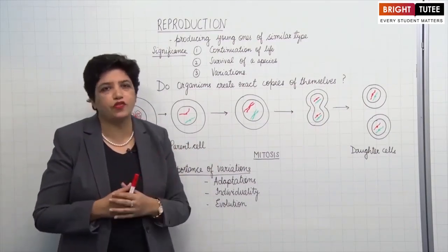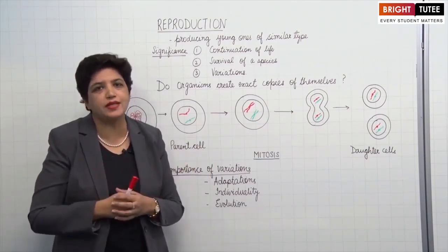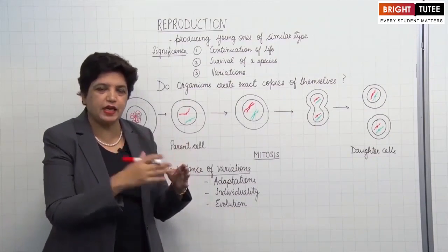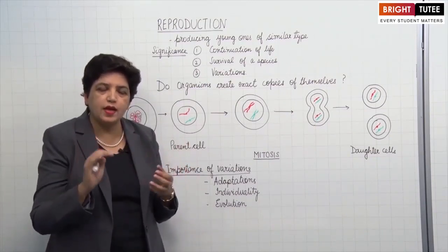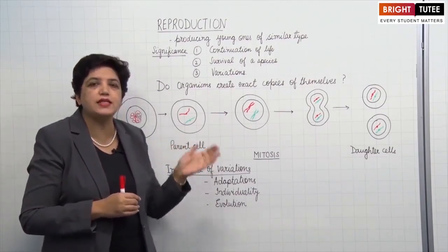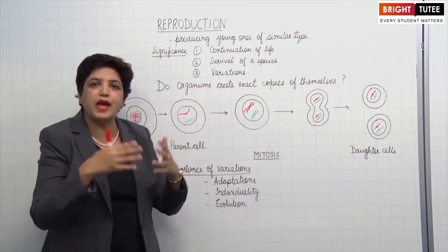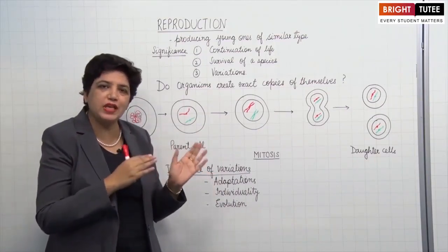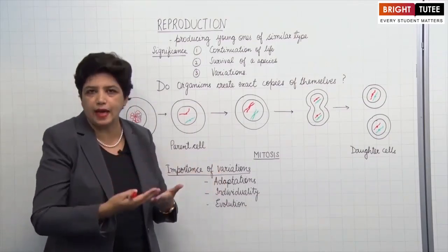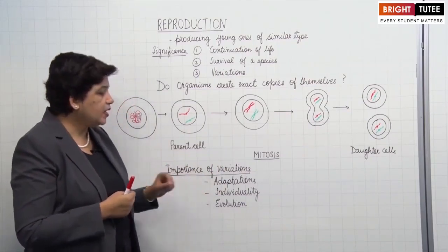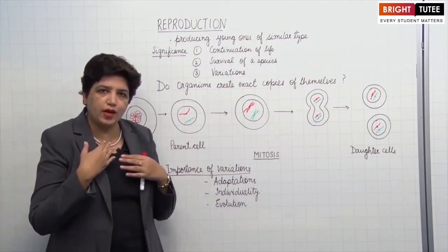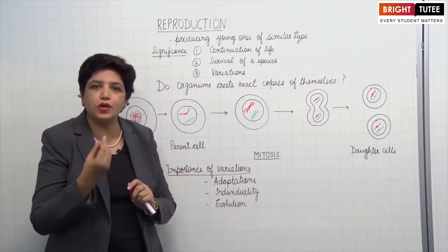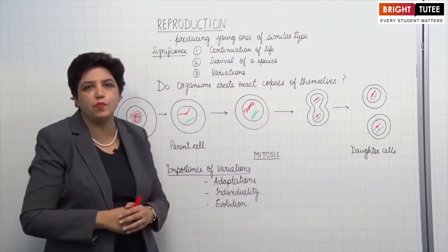For example, we use a lot of insecticides — farmers use them in the field, and we use them at our homes. But still there are so many insects present. If in a certain area you spray an insecticide, most individuals will die. But some insects which are resistant to the insecticides will remain alive. Afterwards, they will multiply, grow, and adapt to these changes in the environment. So because of these variations, new individuals can adapt to the changes in the environment. Secondly, variations help in individuality — I am different from you. We are different from each other. Although we are similar, we are not identical, so we are able to recognize each other because of variations.